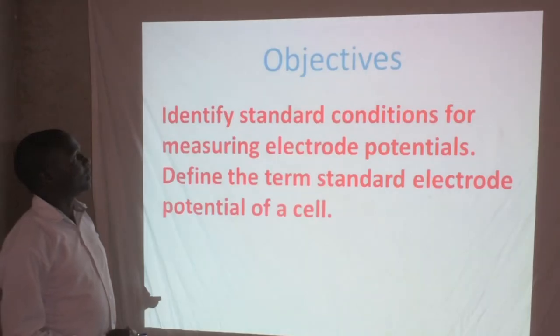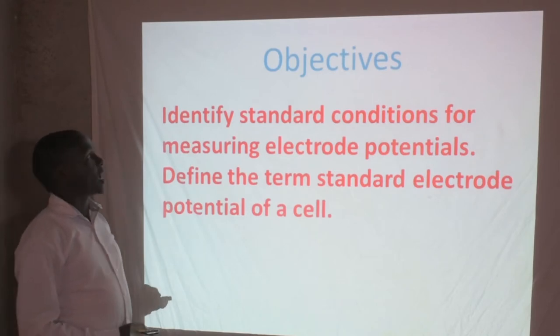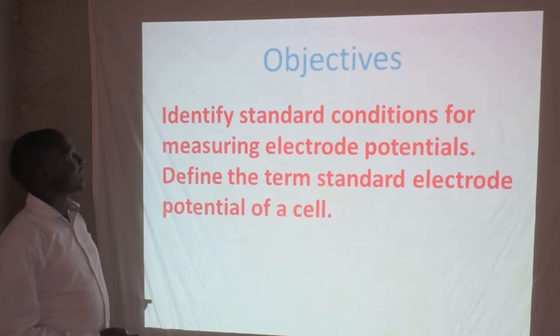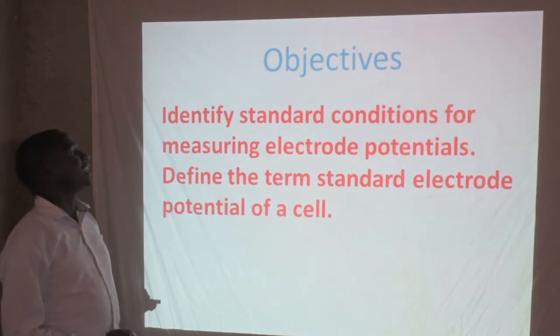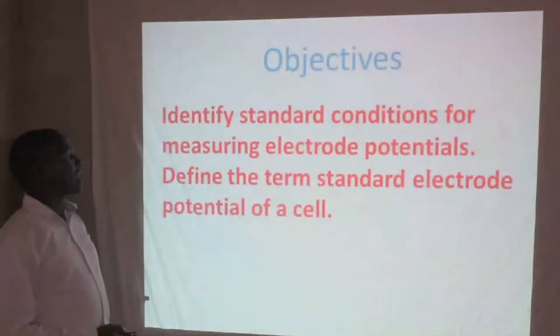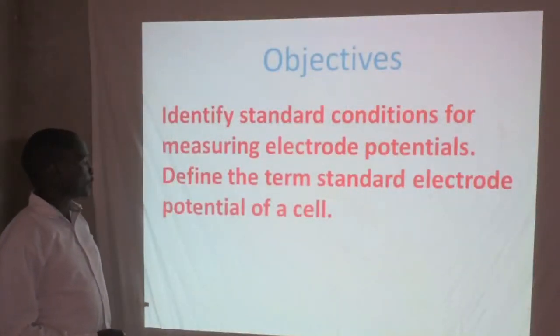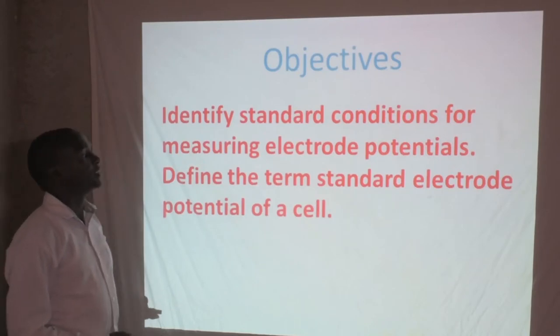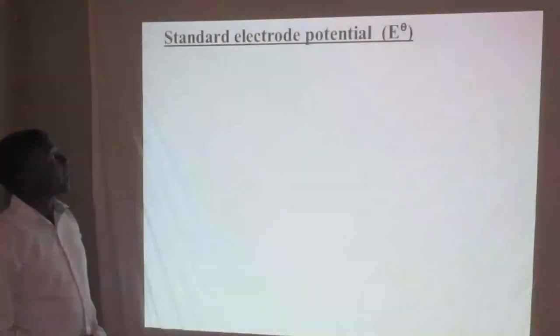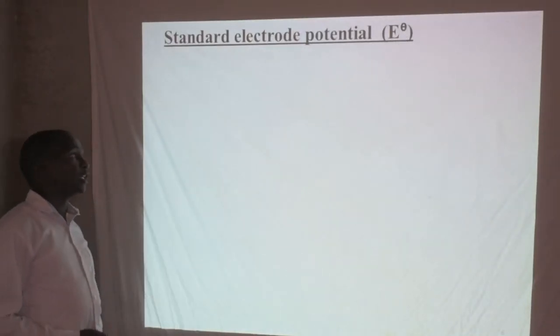Now let's look at the objectives of this lesson. Number one, the learner should be able to identify the standard conditions for measuring electrode potentials. Number two, define the standard electrode potential of a cell. This brings us to our lesson today: we are learning about the electrode potential, which is E-naught.